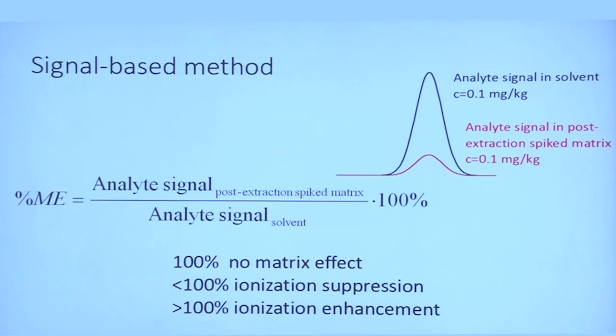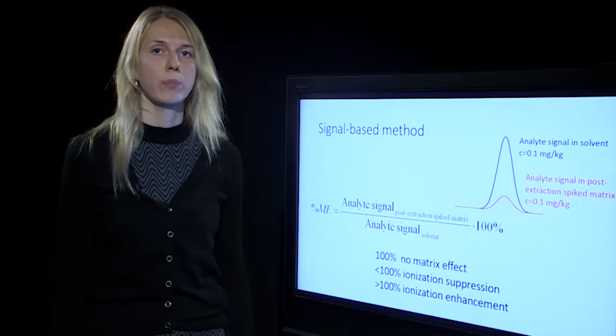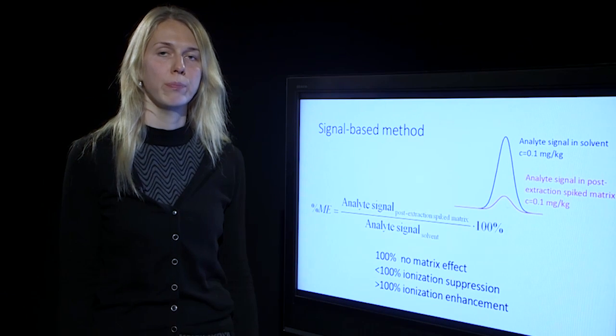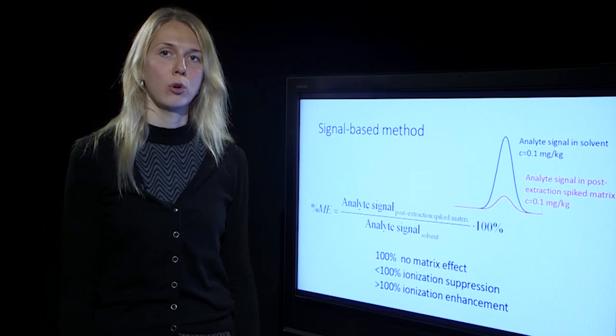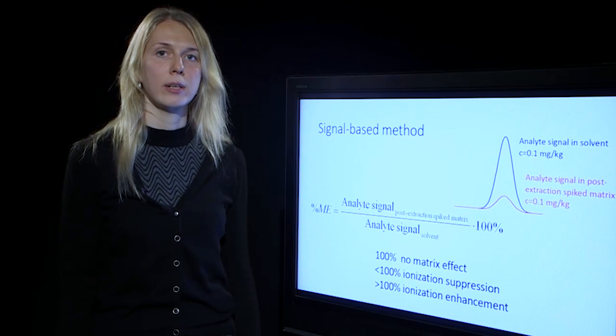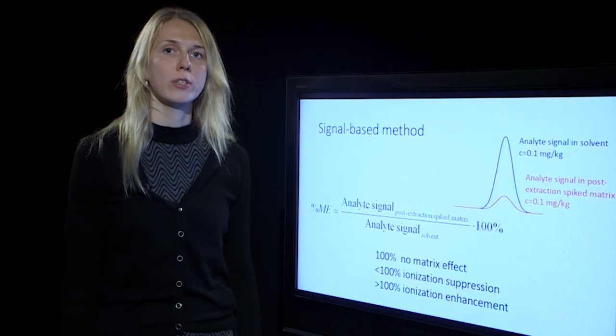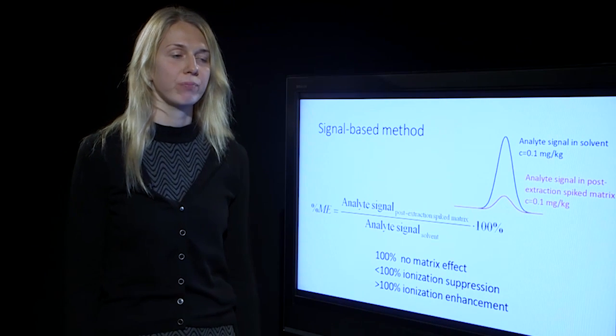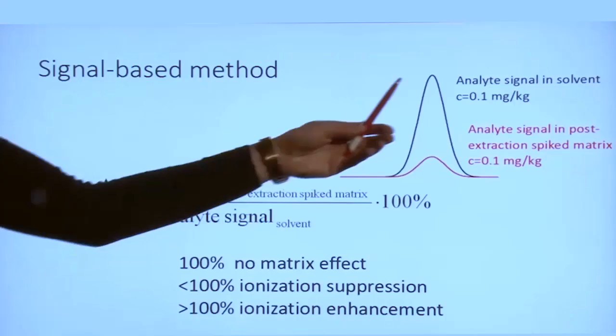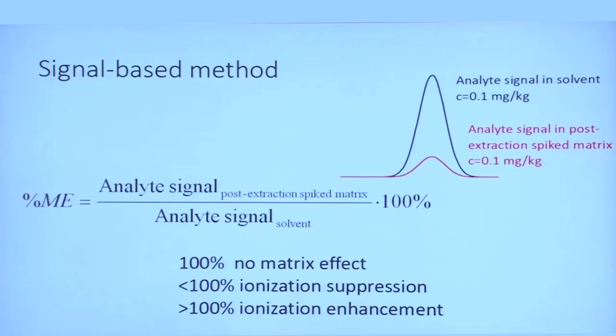Therefore the main method for evaluating matrix effect is by preparing two solutions. One solution that contains analyte and solvent, the standard solution, and the second solution that is prepared by spiking the blank extract of the sample with the same concentration. These two solutions are analyzed and the peaks obtained for both solutions.